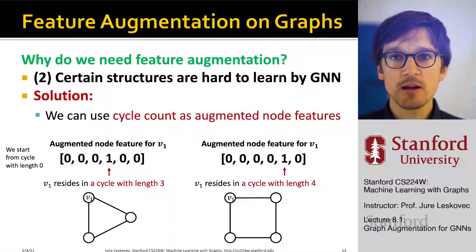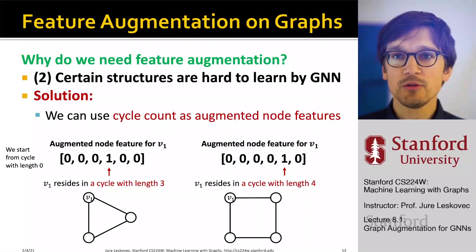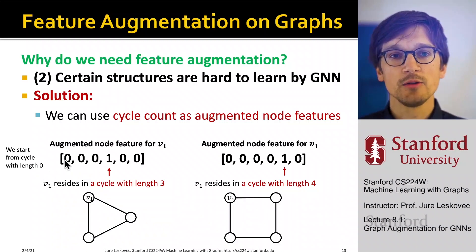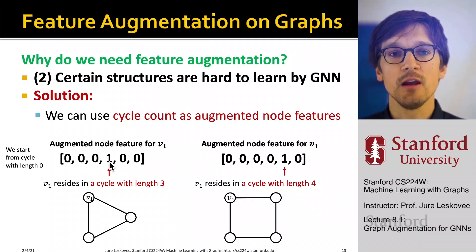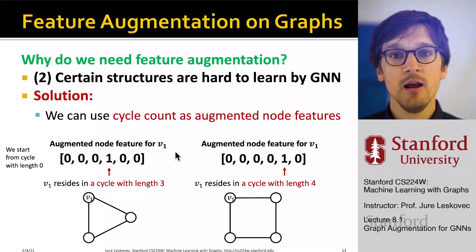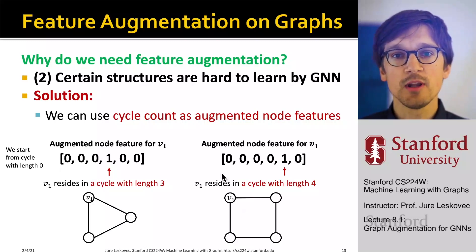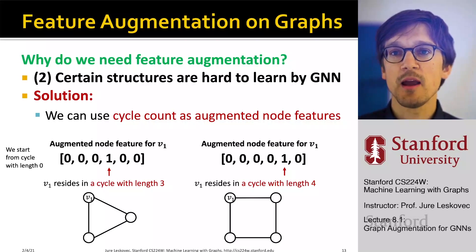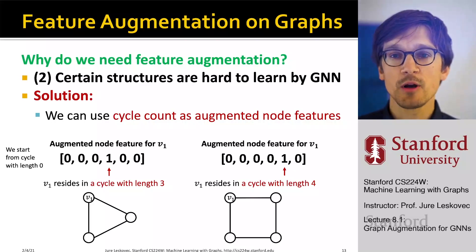The solution is to create a feature vector for every node that encodes cycle count information. One idea is to create a vector where each entry represents the number of cycles of a given length the node participates in: cycles of length zero, one (self-loop), two (reciprocated connection in a directed graph), three (triangle), four (square), and so on. You could append this type of feature vector to whatever feature vector you already have for the nodes, and this way increase the expressive power of the graph neural network, especially if your intuition is that cycle information is important.